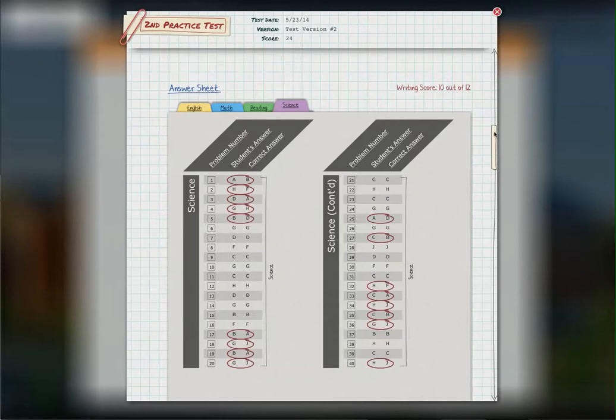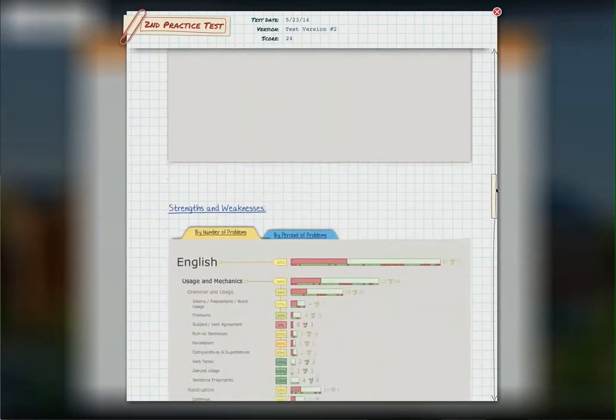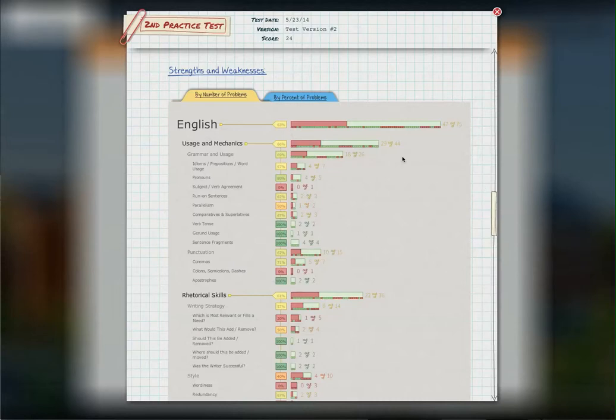If you scroll down some more, this is really where the tool gets really amazing, because here as the instructor guiding the student through this online tool, we are able to look, for example, on the English and say, this student is pretty weak under idioms, prepositions and word usage, 57%.